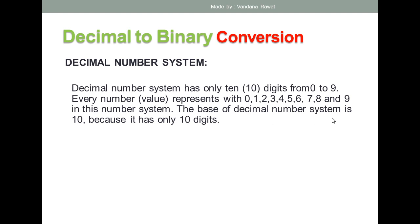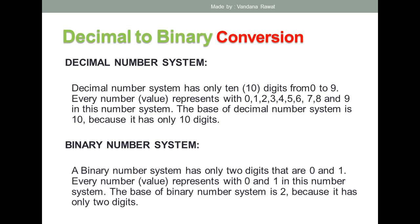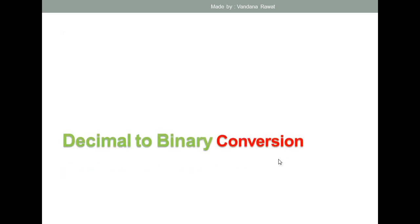The base of the decimal number system is 10 because it has only 10 digits. In the binary number system, the base is 2, and you can only have two digits: zero and one. Every value in binary is represented using zero and one — for example, 11011 or 10101.